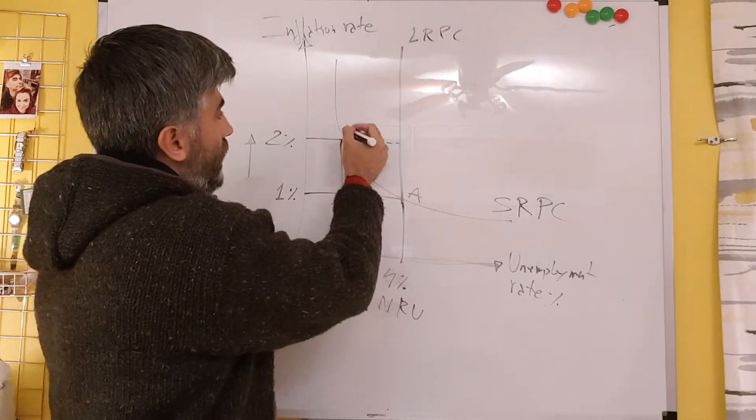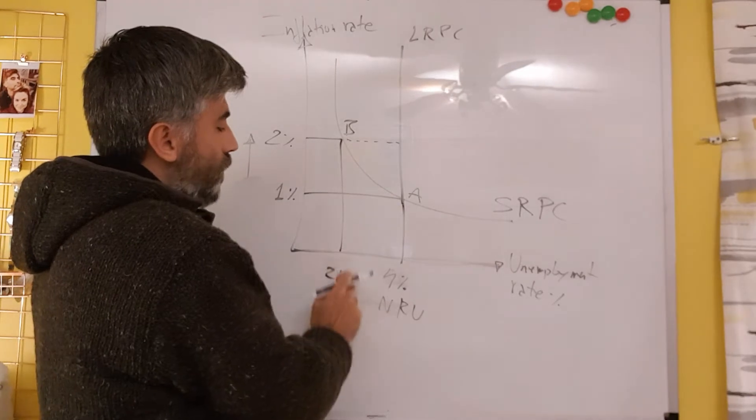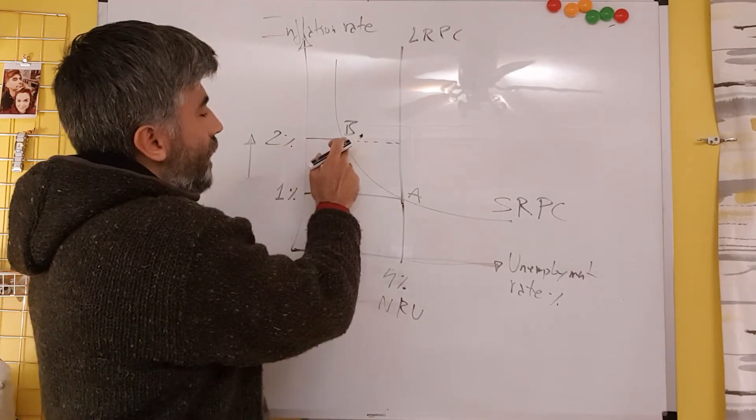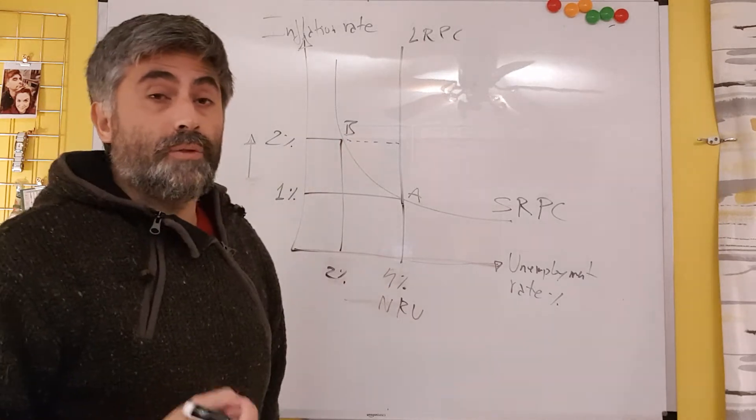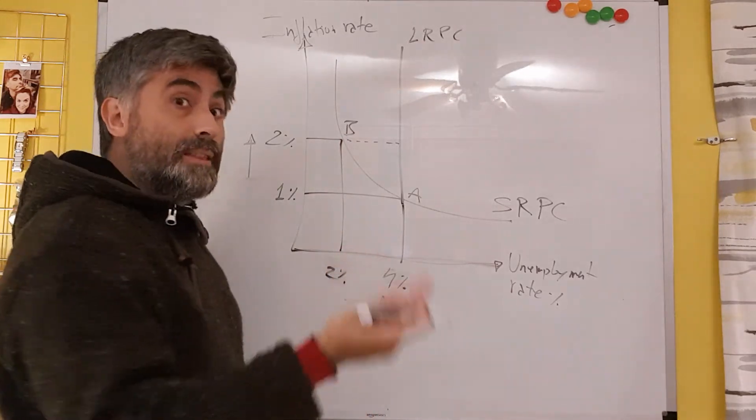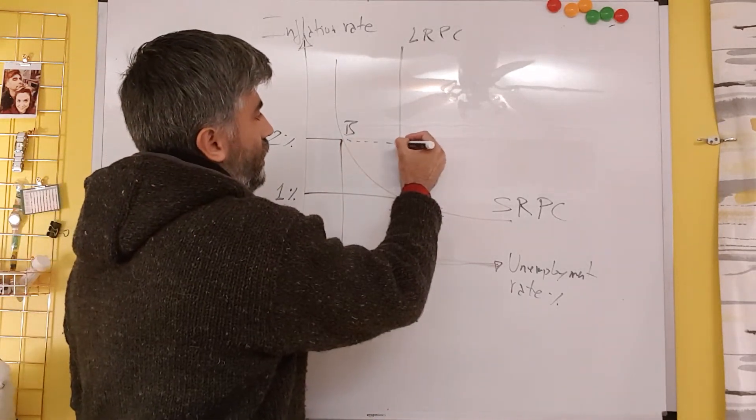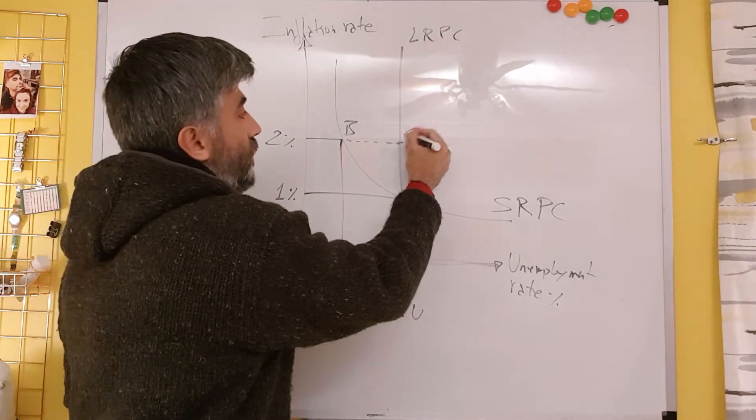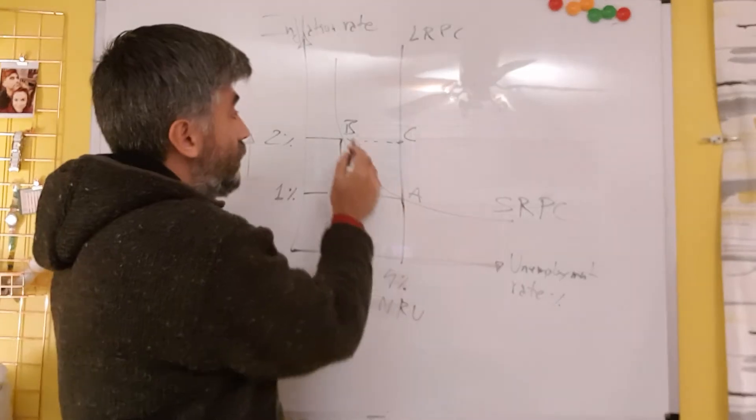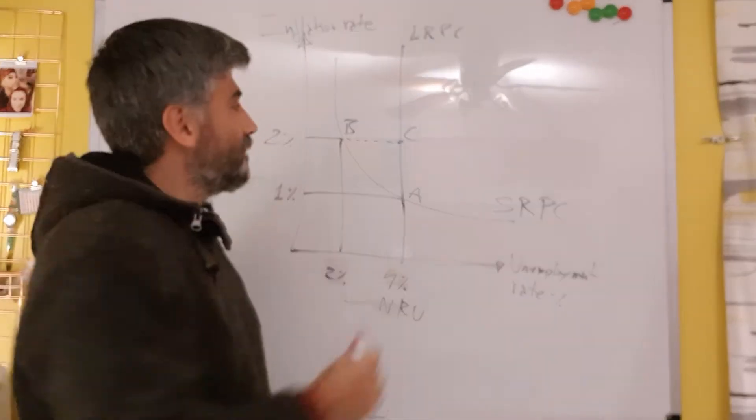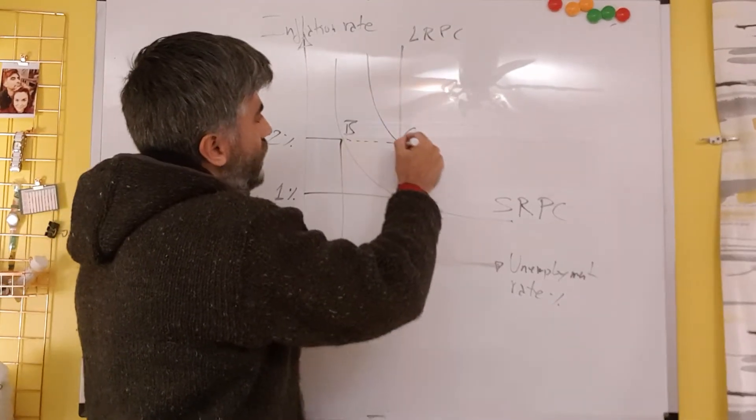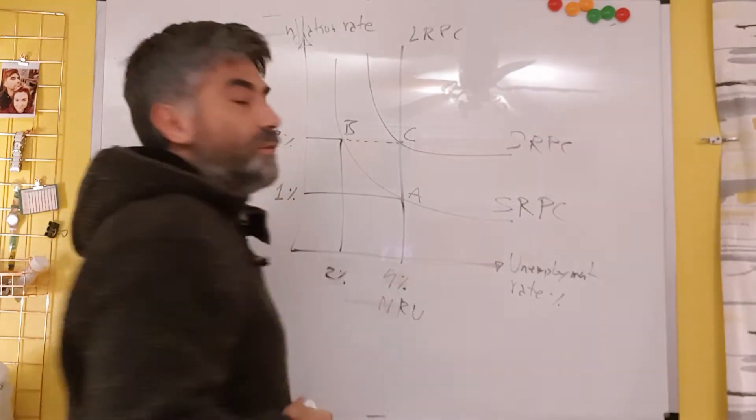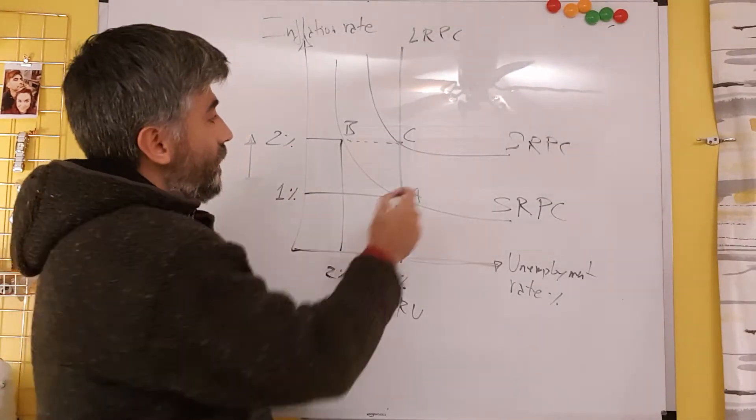We then move here to B, where we have low unemployment at 2%, but a higher rate of inflation. And some people are going to ask for an increase in wages. They get that increase in wage, but by making other people redundant. So we have that movement from A to B to C. And that creates a new short-run Phillips curve. And that's the movement.